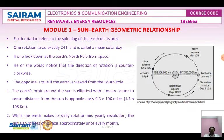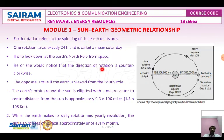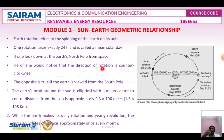The orbit of the Earth around the sun is called Earth's revolution. This celestial motion takes nearly 365.25 days to complete one cycle. The Earth's orbit around the sun is not circular — it is elliptical in nature.